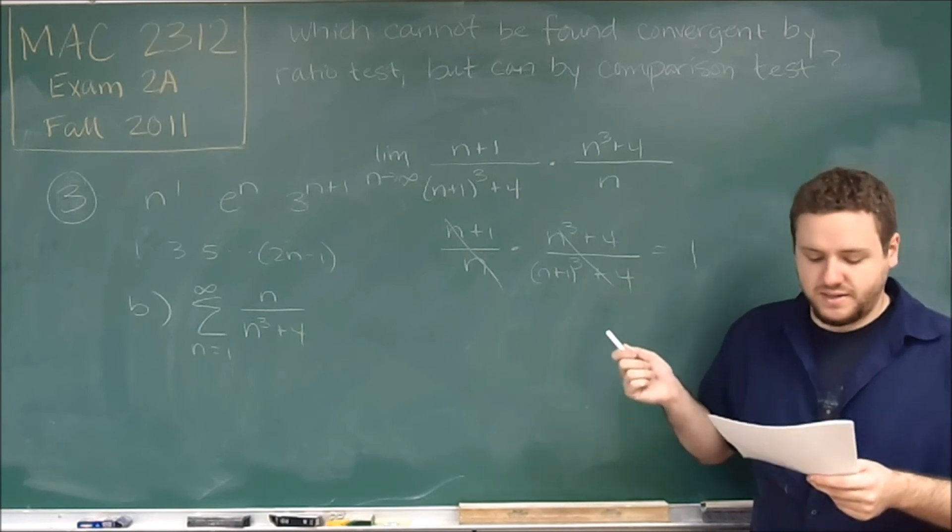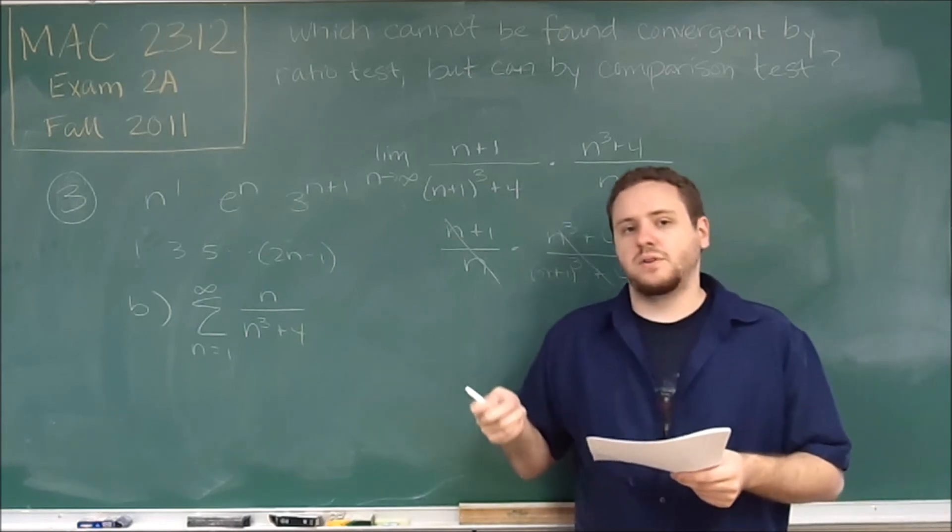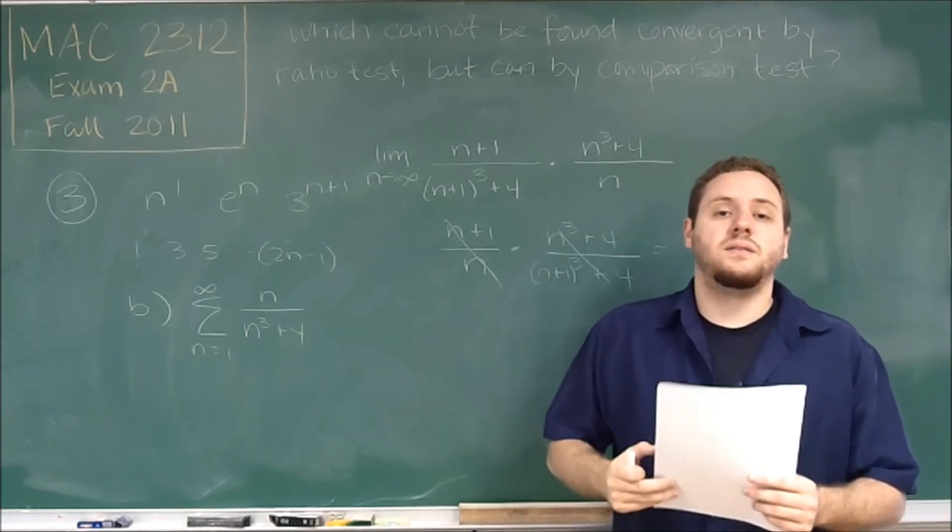So this is why b is correct here. So it can be found convergent, just not by the ratio test.